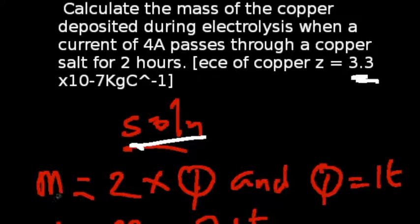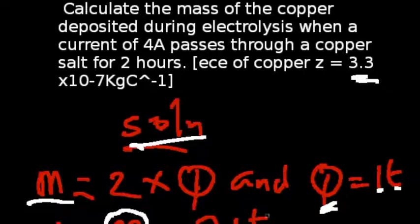we are going to be using the formula mass is equal to the electrochemical equivalence multiplied by the charge Q. And we have our Q to be the product of current I times time. Therefore, we can say our mass M is equal to the electrochemical equivalence multiplied by the current multiplied by the time.